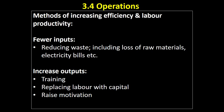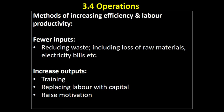Reducing waste — including any raw materials lost in the production process — and reducing electricity bills will help maintain a low input cost. If we can reduce electricity bills while producing the same amount of output, our unit cost will fall and we'll be more efficient.